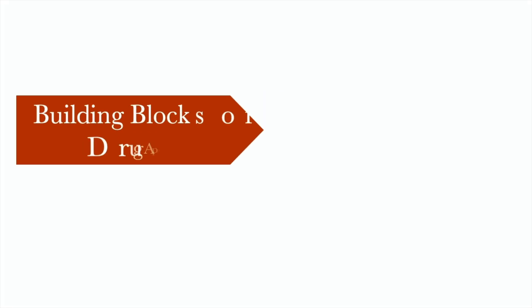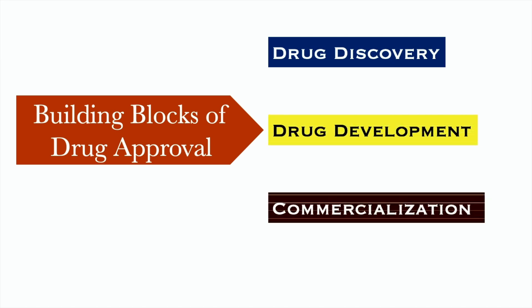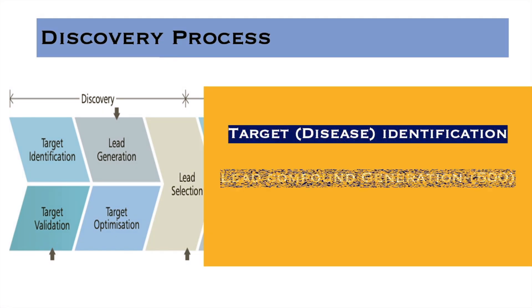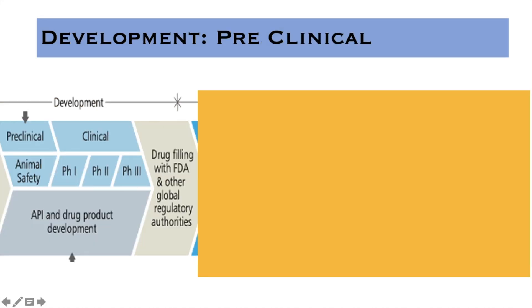Let's start with the drug discovery process. When a tablet comes to your hands, do you know how many stages it has to go through? This is a 3-step process. The building blocks of the drug approval process are: drug discovery, then drug development, and then commercialization. In the discovery stage, a disease is identified. Then we start looking for a lead compound, starting from roughly 500 potential compounds. Through lead selection, this is narrowed down to finally one compound.